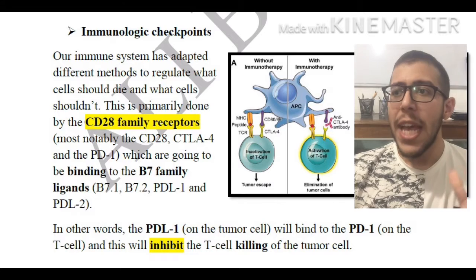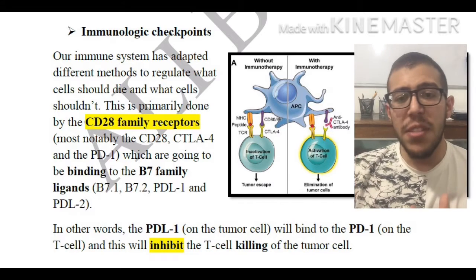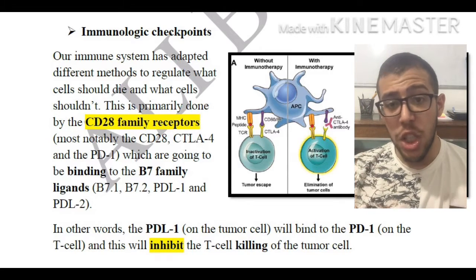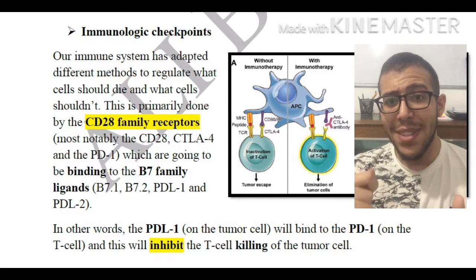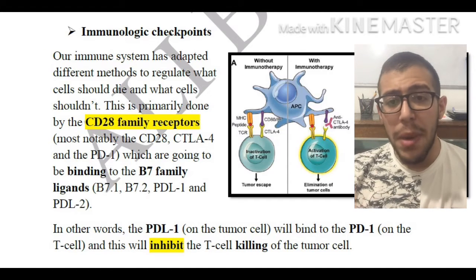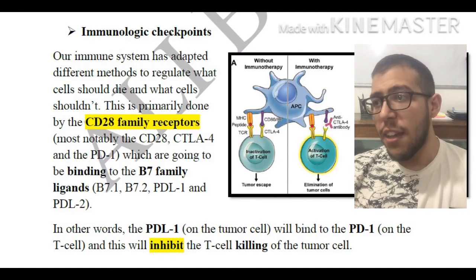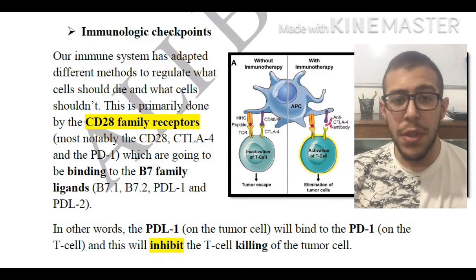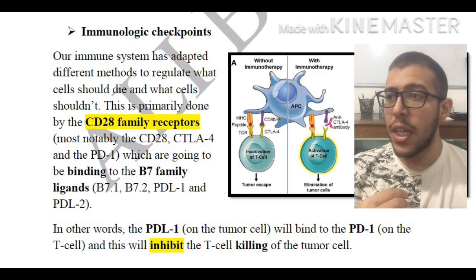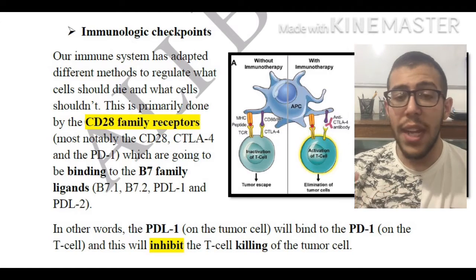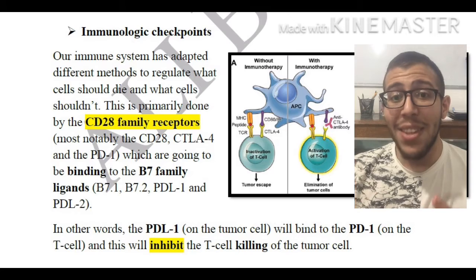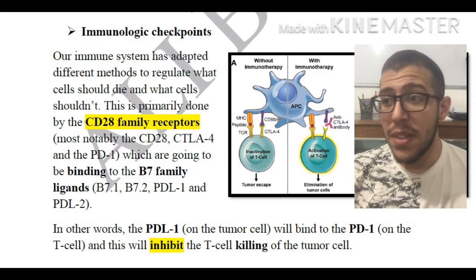Our immune system has adapted different methods to regulate what cells should die and what cells shouldn't. This is primarily due to the presence of the CD28 family receptors, most notably the CD28, the CTLA4, and the PD1, and their respective receptors.